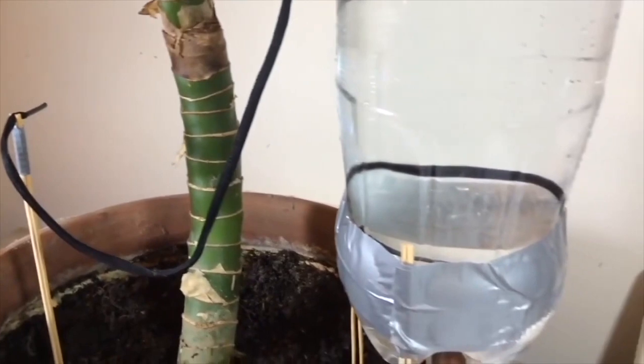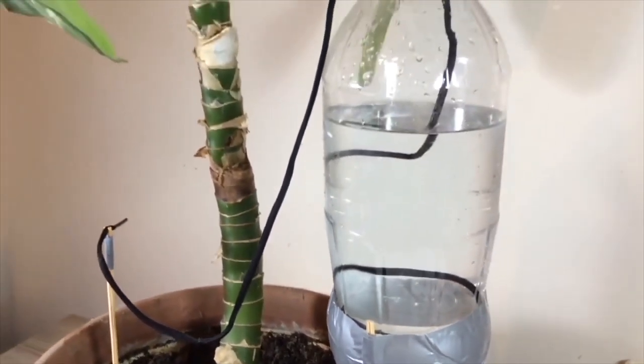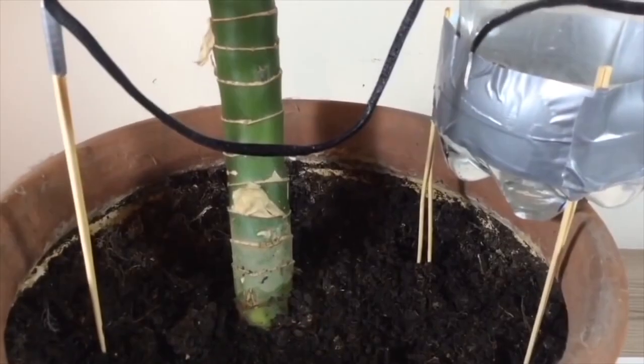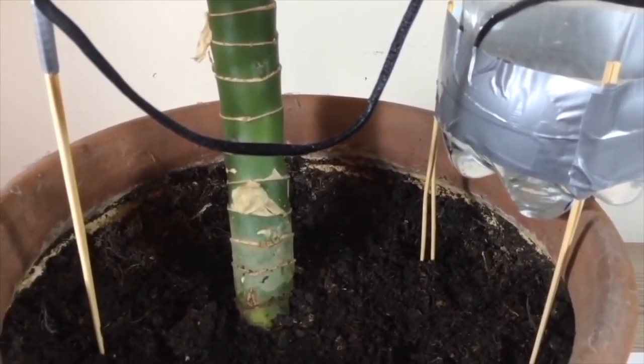You can see that the water starts to drip within a few minutes. A two and a half litre bottle is emptied in five to six days.